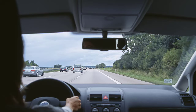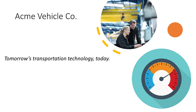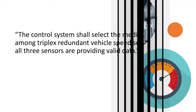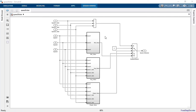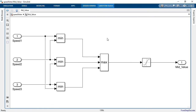Let's see it in action. In this scenario I am an engineer working on a new version of control system software in a vehicle. I have been tasked with implementing the following requirement in Simulink: the control system shall select the median value among triplex redundant vehicle speed sensors when all three sensors are providing valid data. I would like to save time when implementing this requirement, so I have started with a model from a legacy vehicle program.